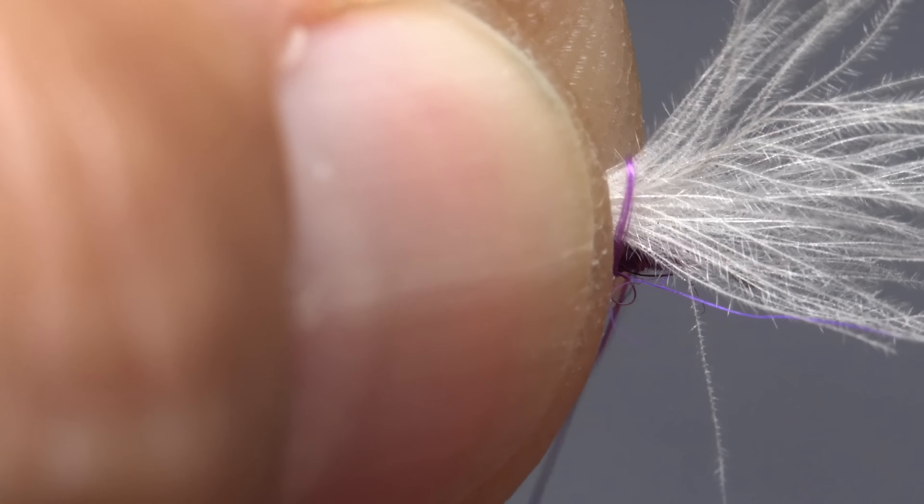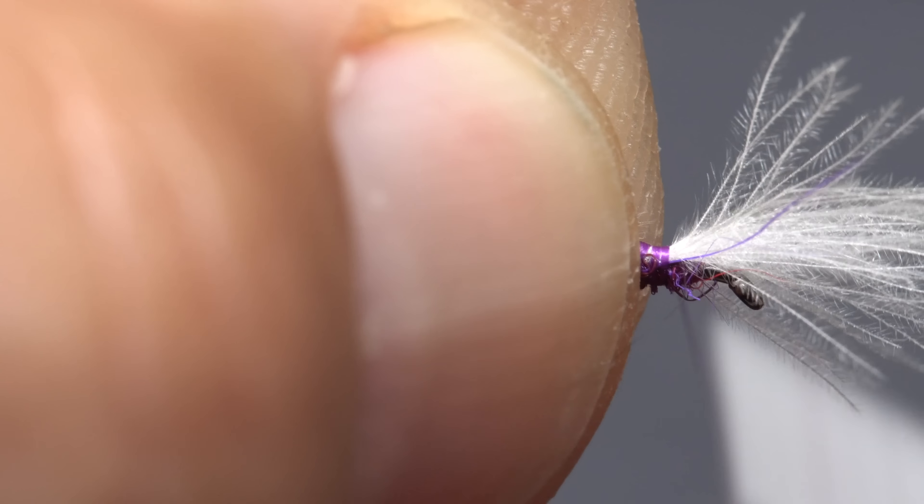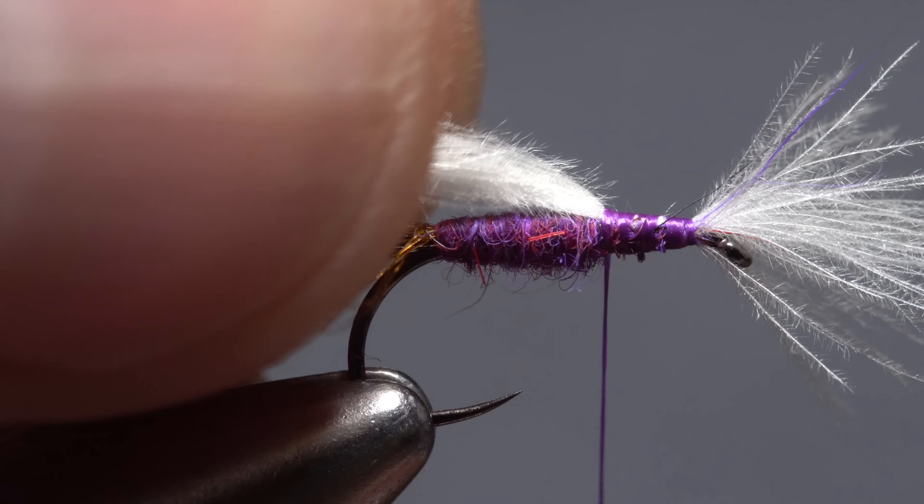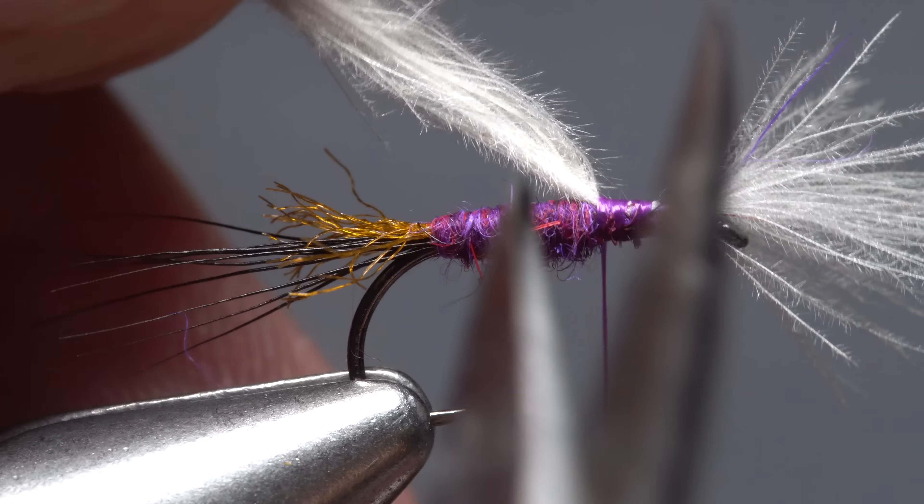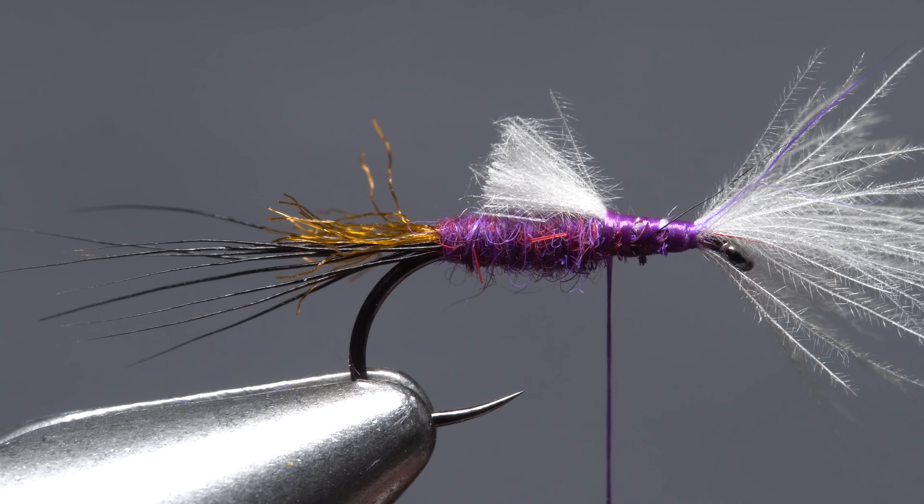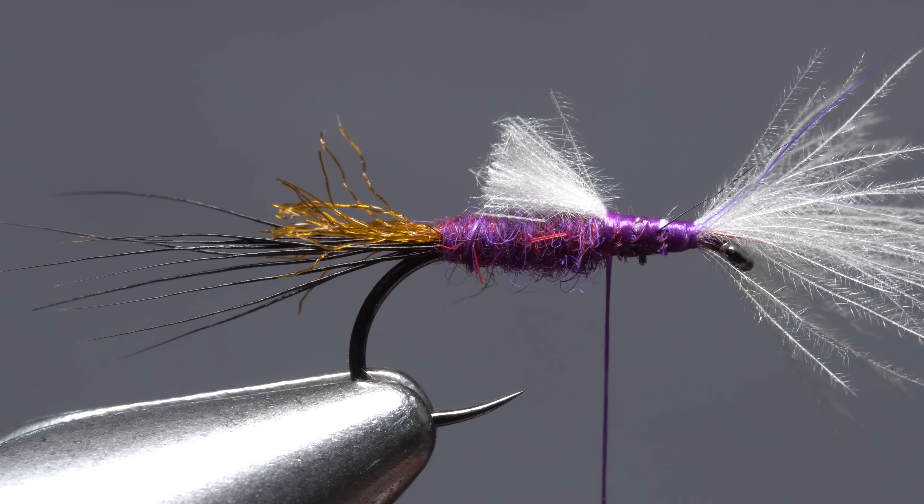Take a few nice tight thread wraps to really anchor the wing then once again wrap rearward to the back end of the thorax. While maintaining your grip on the butt ends of the CDC, lift up and snip them off so they extend a little more than halfway down the abdomen of the fly.